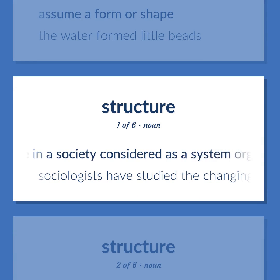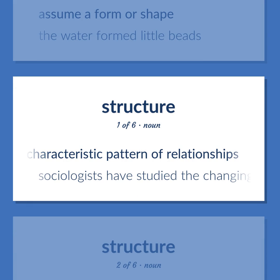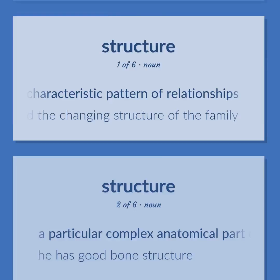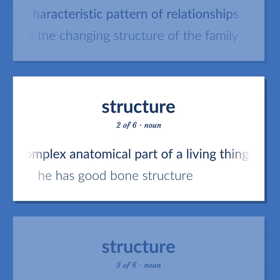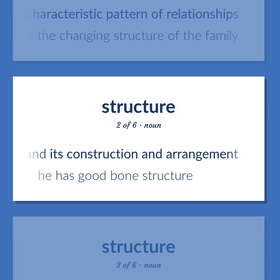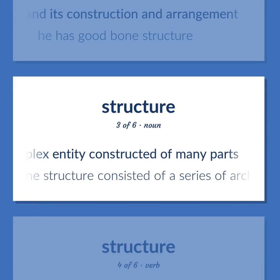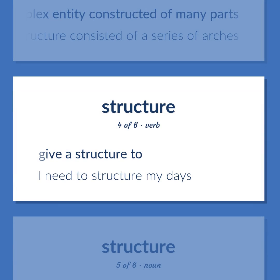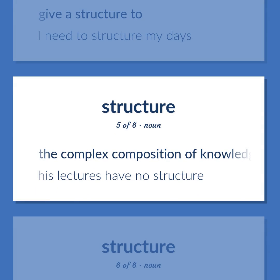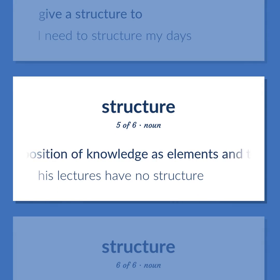Structure: The people in a society considered as a system organized by a characteristic pattern of relationships. Example: Sociologists have studied the changing structure of the family. A particular complex anatomical part of a living thing and its construction and arrangement. Example: He has good bone structure. A complex entity constructed of many parts. Example: The structure consisted of a series of arches. Give a structure to. Example: I need to structure my days. The complex composition of knowledge as elements and their combinations. Example: His lectures have no structure.